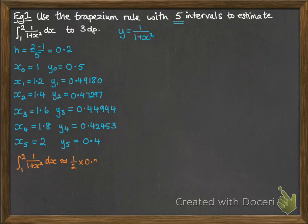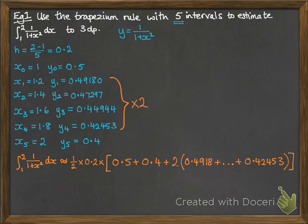Okay, now putting it into the trapezium rule looks like this, where that 2 times part was all of those numbers in the middle there.